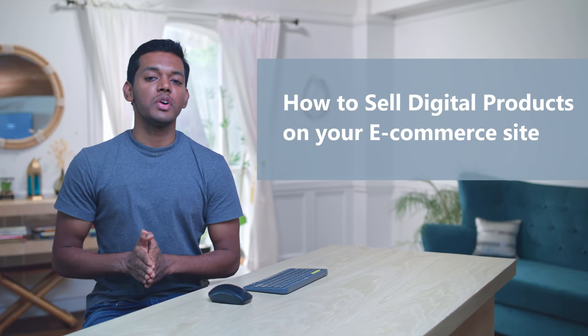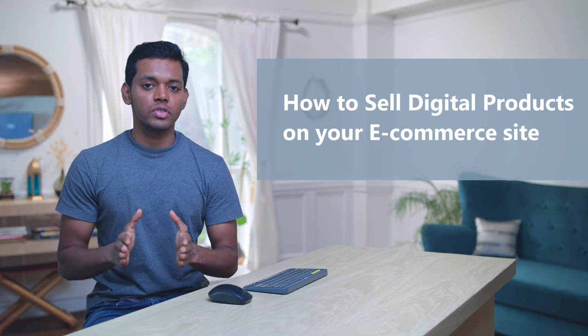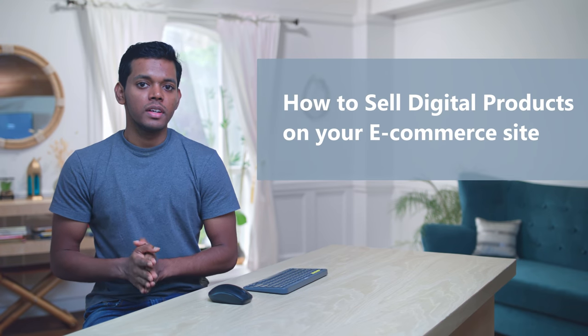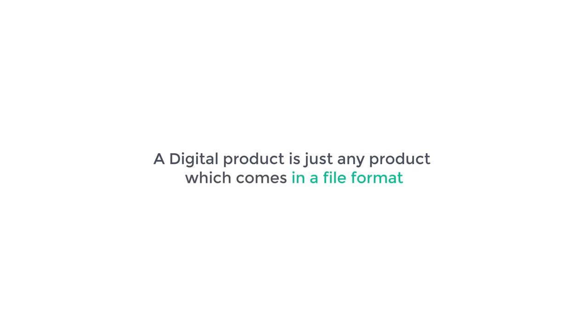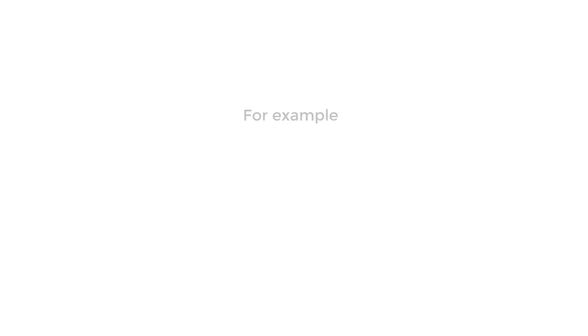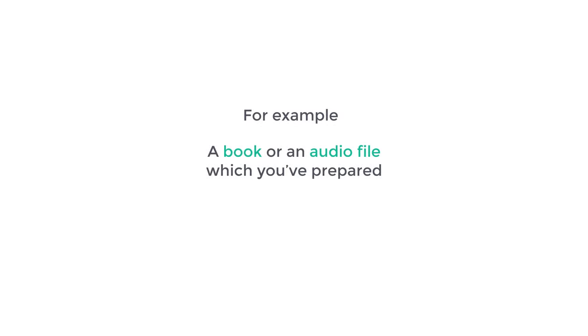Hi guys, today we are going to see how you can sell digital products on your e-commerce site. First, let's see what digital products are. A digital product is any product which comes in a file format, such as a book or an audio file which you have prepared. These are called digital products.